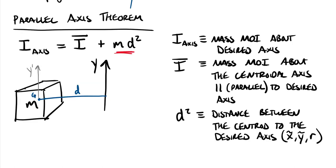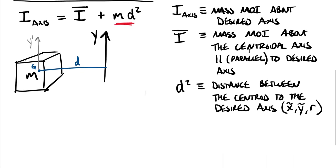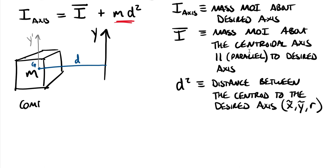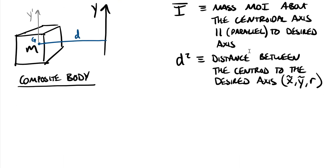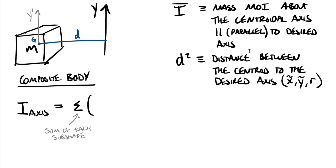Now for a composite body, which is made up of individual subshapes each with a known mass moment of inertia, the moment of inertia about some axis equals the sum — for each subshape — of I-bar of each subshape plus M times D squared, where M is the mass of each subshape and D is the distance from that subshape's centroid to the desired axis.